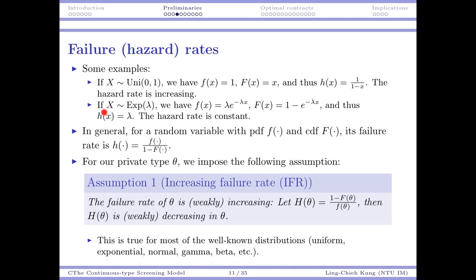A special case is when X is exponentially distributed with parameter lambda. Its PDF is lambda·e^(−lambda·x) and CDF is 1 − e^(−lambda·x). Plugging into the hazard rate formula gives h(t) = lambda — a constant. This means the failure rate is the same at any moment, which is the memoryless property of the exponential distribution.